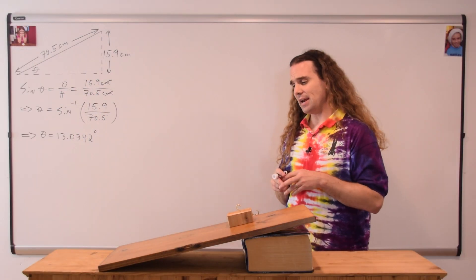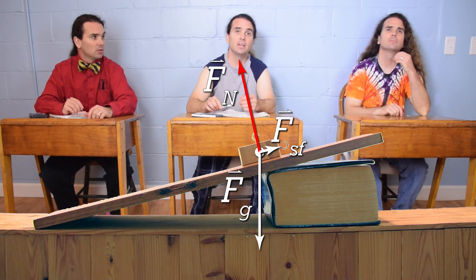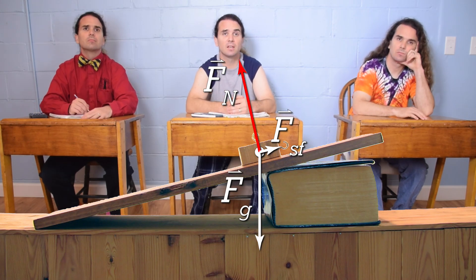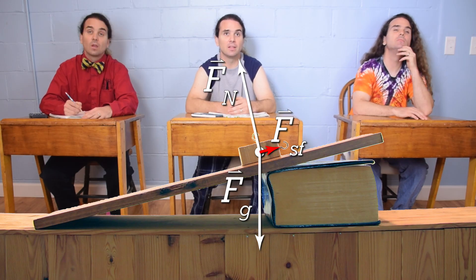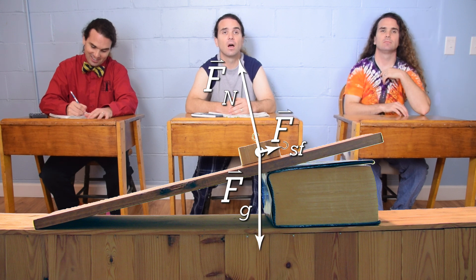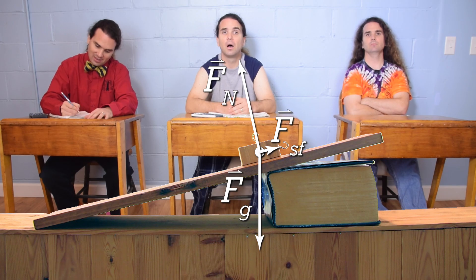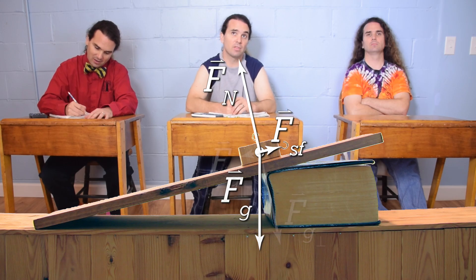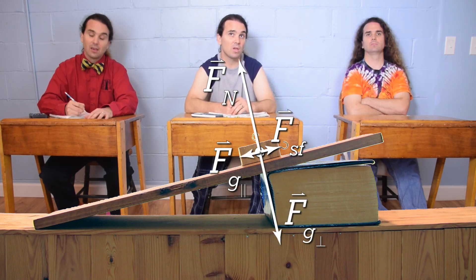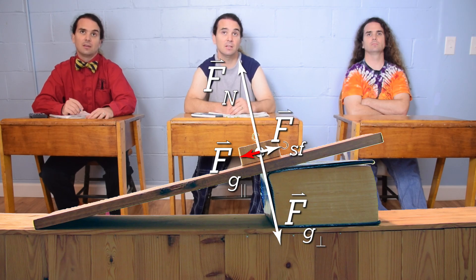Now that we have the incline angle, Bobby, could you please tell me all the forces that are currently acting on this block? The force normal is up and perpendicular to the incline, and the force of static friction is parallel to and up the incline, and the force of gravity is straight down. Thank you for showing that you should always draw the free body diagram before breaking forces into components, and then redraw the free body diagram with the components. Now use the components of the force of gravity. Rather than the force of gravity, we have the force of gravity perpendicular, which is perpendicular to the incline and down, and the force of gravity parallel, which is parallel to and down the incline.